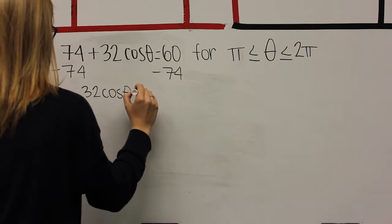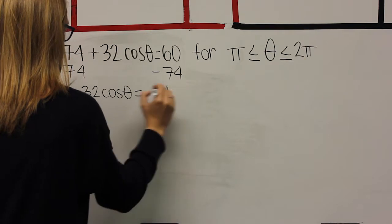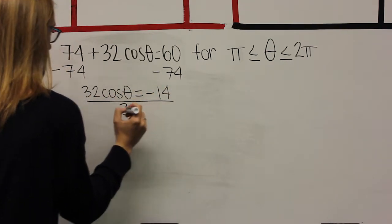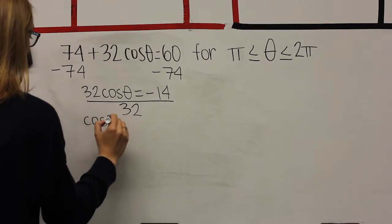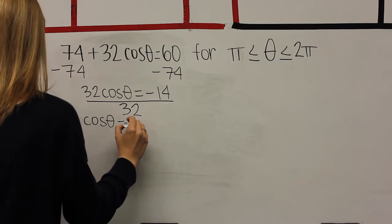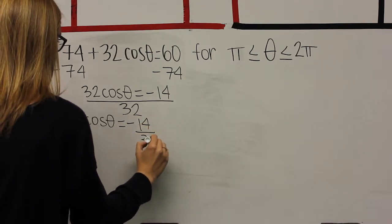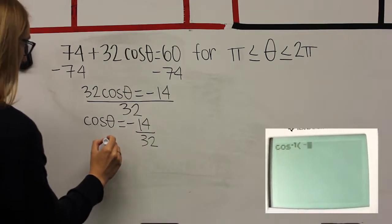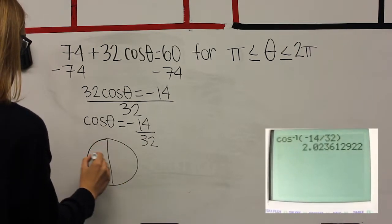For problem 2a, we start the problem with a new domain, and it's pi to 2 pi. So our answers can only be in quadrant 3 or in quadrant 4. After you isolate cosine, you get negative 14 divided by 32. The inverse cosine is 2.024, which is in quadrant 2, and is not possible because it is not within the given domain. So your answer would be 4.260 after you subtract the original answer from 2 pi.